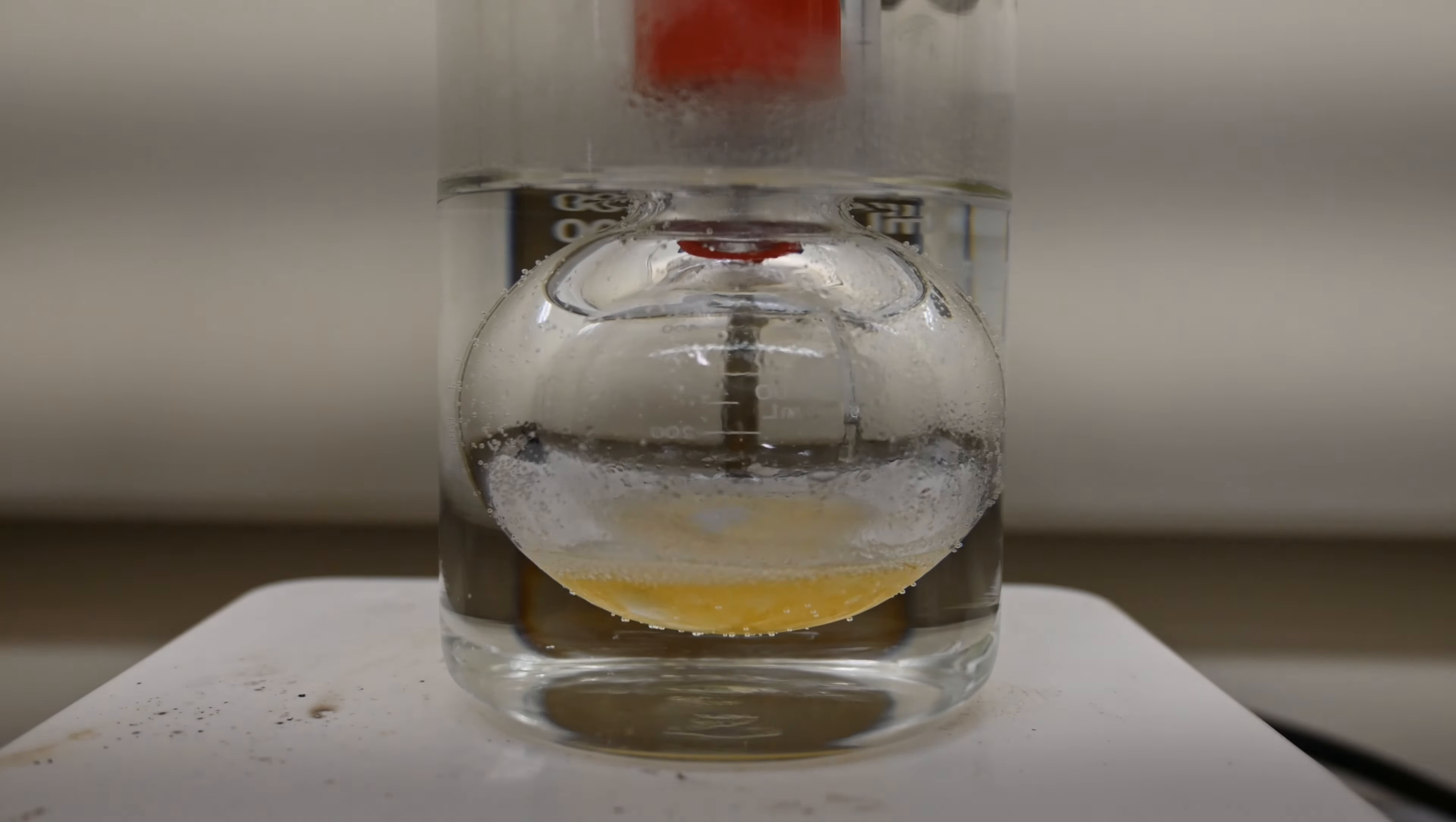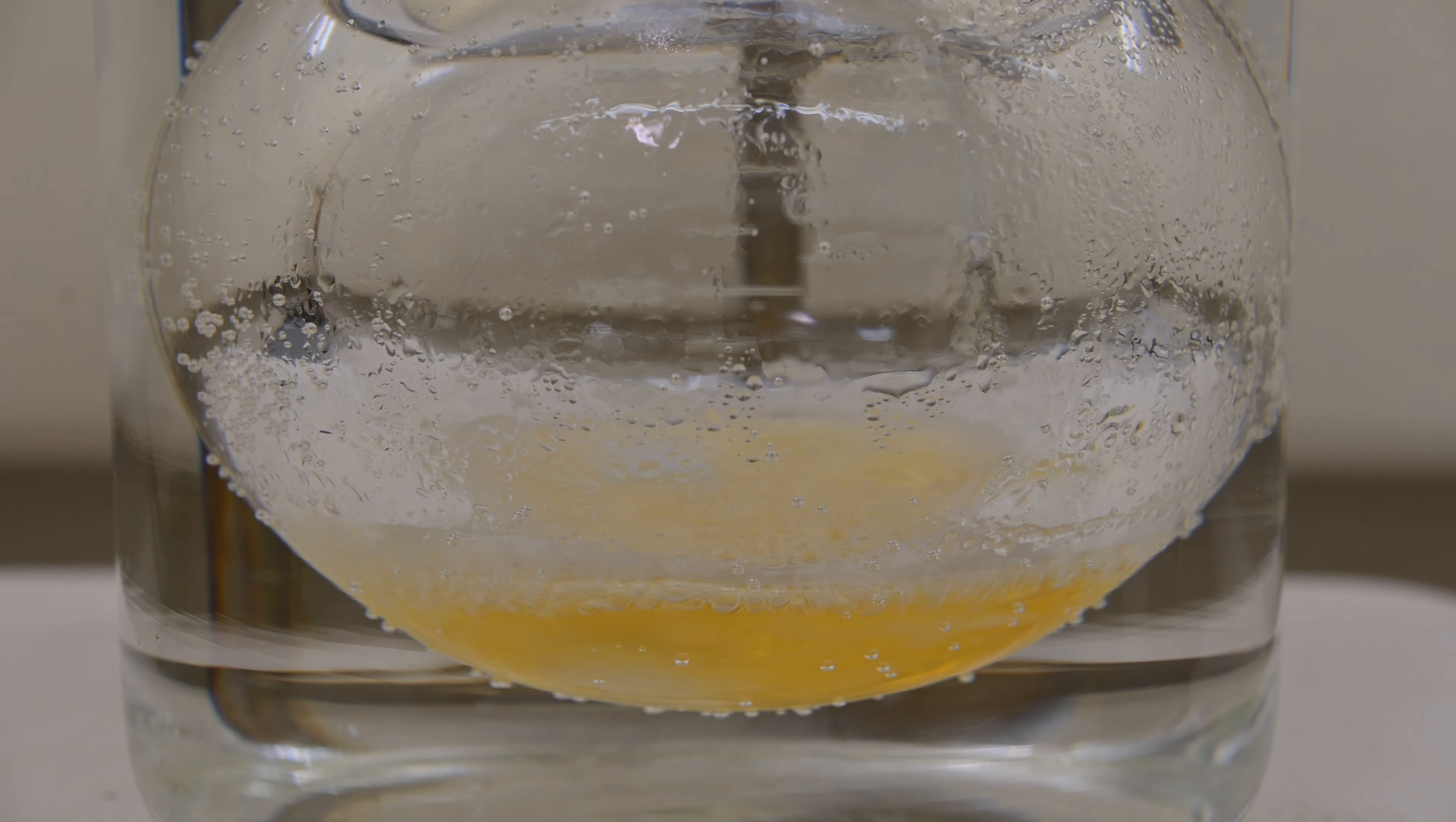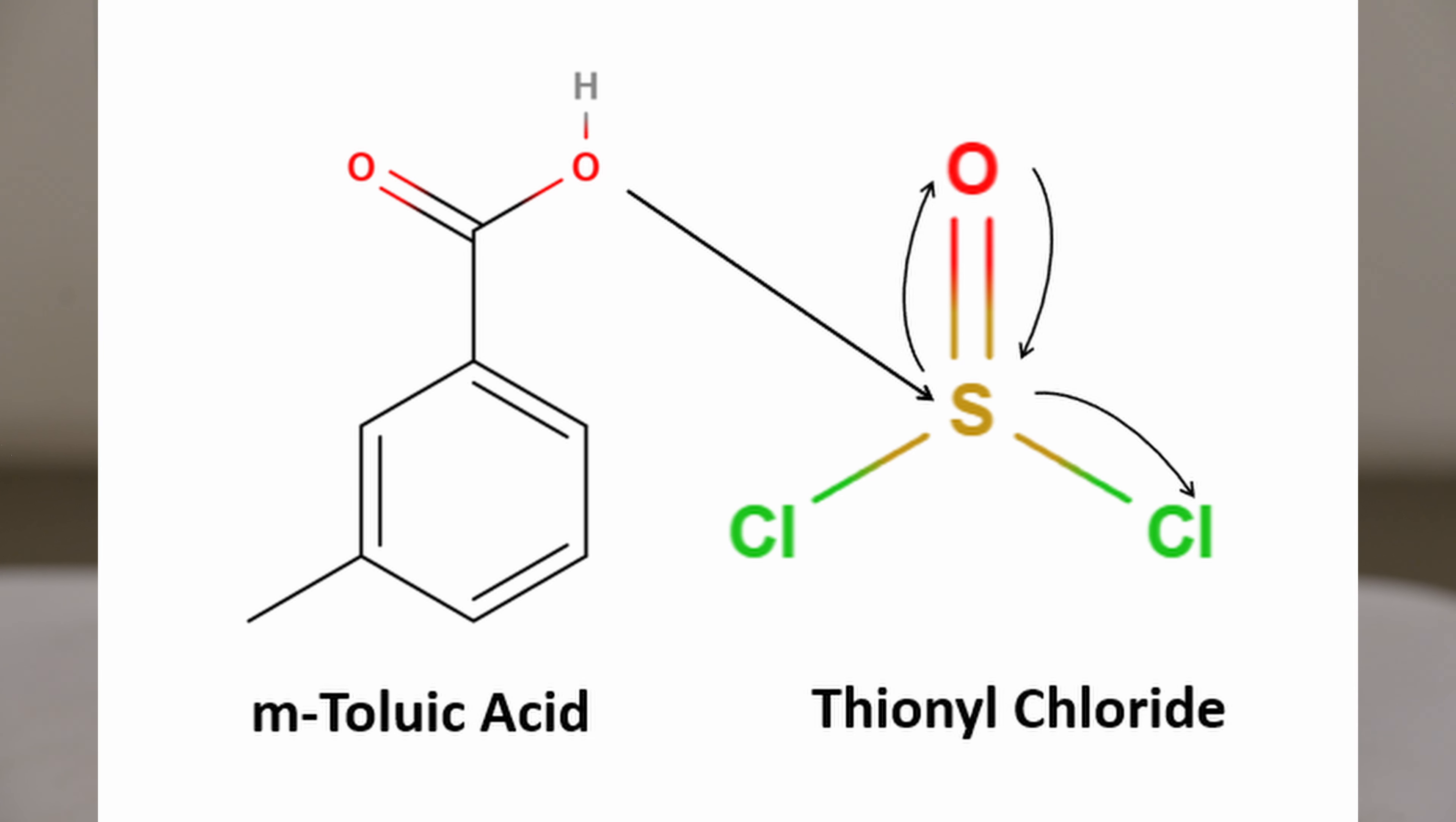The reaction of a carboxylic acid with thionyl chloride to form an acid chloride is a common and efficient method in organic chemistry. In this process, the carboxylic acid reacts with thionyl chloride, resulting in the formation of an acid chloride while releasing sulfur dioxide and hydrogen chloride as byproducts. The reaction begins with carboxylic acid, which initially reacts with thionyl chloride to form an intermediate complex. This involves the nucleophilic attack of the carbonyl oxygen of the carboxylic acid on the sulfur atom of the thionyl chloride.